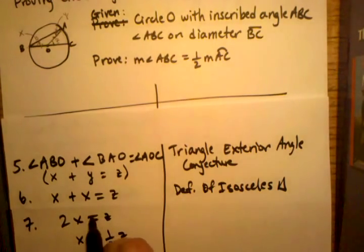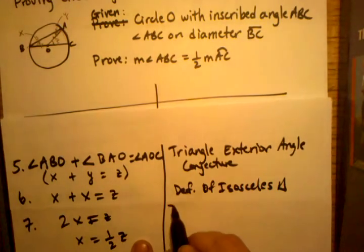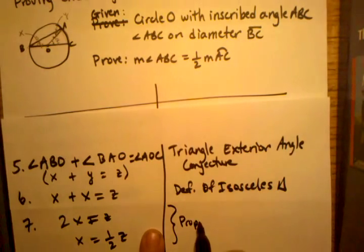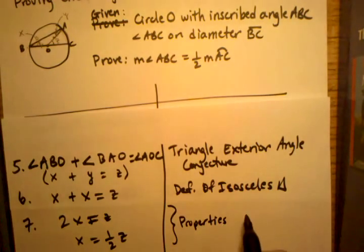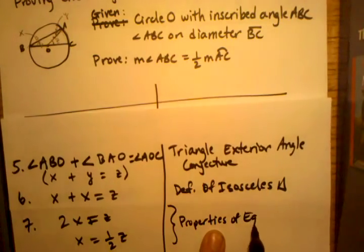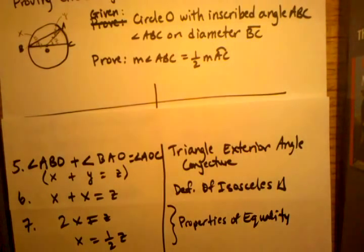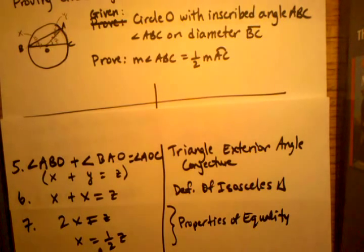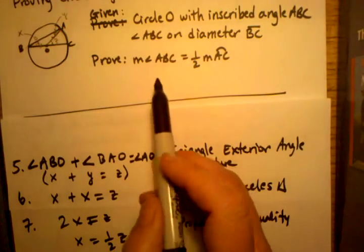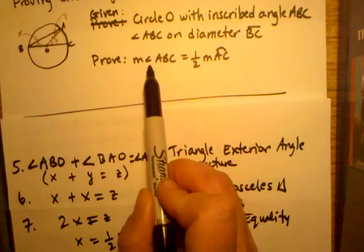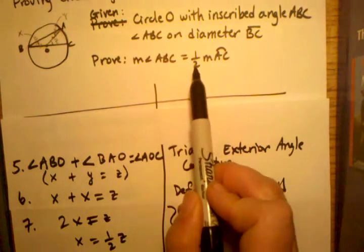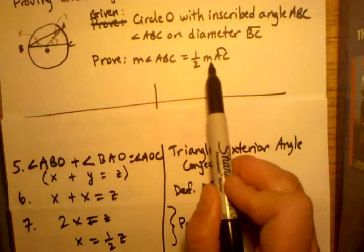Now doing my algebra: 2X equals Z, and therefore X equals one-half Z. When I'm doing algebra like this — just balancing an equation, moving things from side to side — I can call that properties of equality. So now X equals one-half Z, which is starting to look very close to my original statement: measurement of angle ABC equals one-half times the measurement of arc AC.